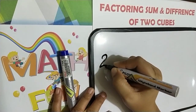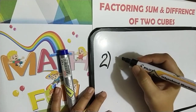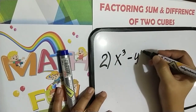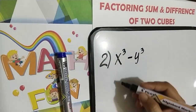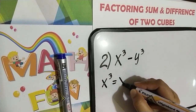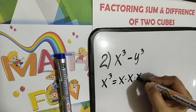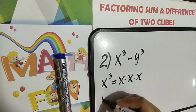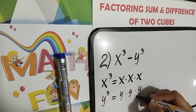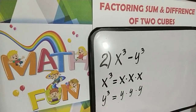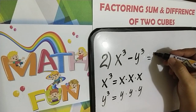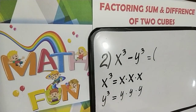For example number two, what if the given is minus? So, x cubed minus y cubed. Again, let's find the factors of our first term. The factors of x cubed are x times x times x. And for the factors of our second term, y cubed, those are y times y times y. After getting the factors, we can get now the two factors of our given.